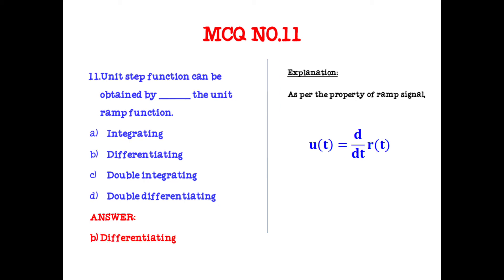The unit step function can be obtained by differentiating the unit ramp function: u(t) = d/dt of r(t). Since r(t) = t, then d/dt of t = 1, and that 1 is u(t).